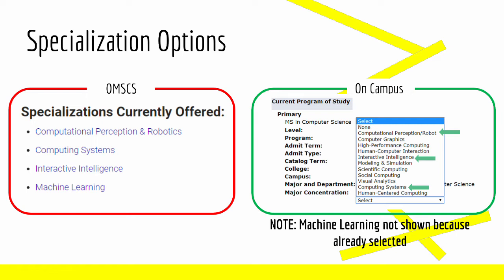Here we see the four specializations offered for OMS CS students: Computational Perception and Robotics, Computing Systems, Interactive Intelligence, and Machine Learning. On the right, we see a snippet of the actual specialization selection dropdown found on Buzzport. We can point out that the OMS CS specializations are offered — the only one missing is Machine Learning, because I have already selected it as my chosen specialization. There are a lot of additional specializations offered to on-campus students, such as Computer Graphics and Social Computing. If these interest you, remember that you can take courses related to these specializations as your free electives.